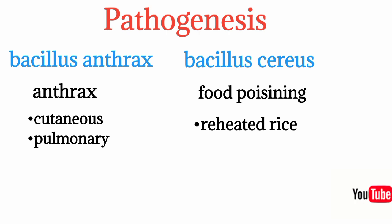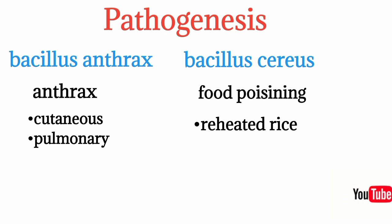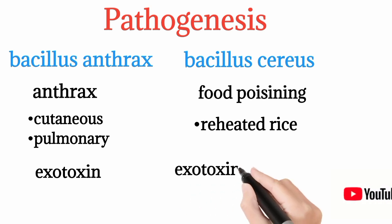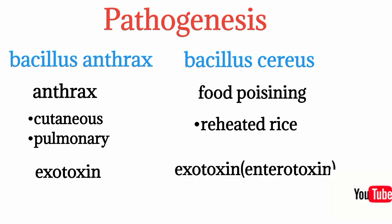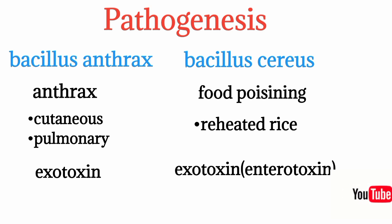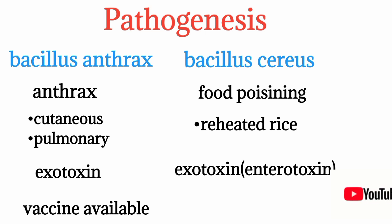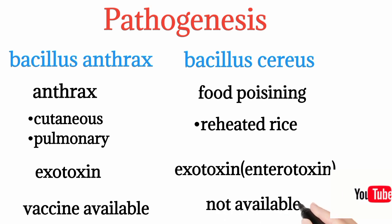For Bacillus cereus, exotoxin production and spore germination occur in reheated rice. If you reheat old rice, you are at risk of Bacillus cereus food poisoning. The exotoxin is also called an enterotoxin because it affects the intestine, causing food poisoning symptoms.